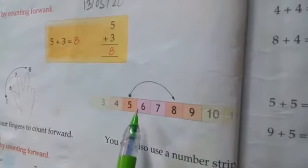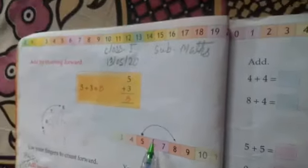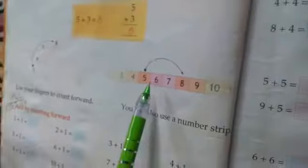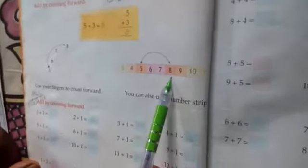We count 3 numbers: 1, 2, 3. After 5, we count 3 numbers: 1, 2, 3. So,